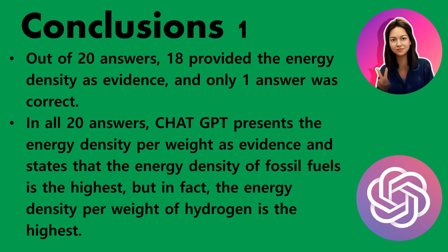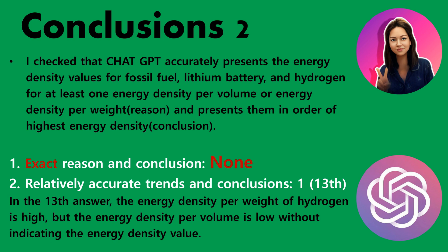Out of 20 answers, 18 provided energy density as evidence, and the energy densities of only one answer were correct. In all 20 answers, ChatGPT presents the energy density per weight as evidence and states that the energy density of fossil fuels is the highest. But in fact, the energy density per weight of hydrogen is the highest. I checked that ChatGPT accurately presents the energy density for fossil fuel, lithium battery, and hydrogen.